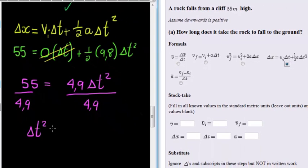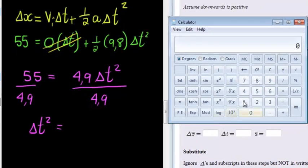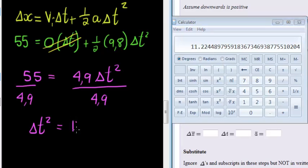4.9, and what do I get? I get that delta t squared is equal to, do the calculator, 55 divided by 4.9, answer 11.224489. Okay, I'm just going to write it as 11.224489. Rather don't yet round off your answer.